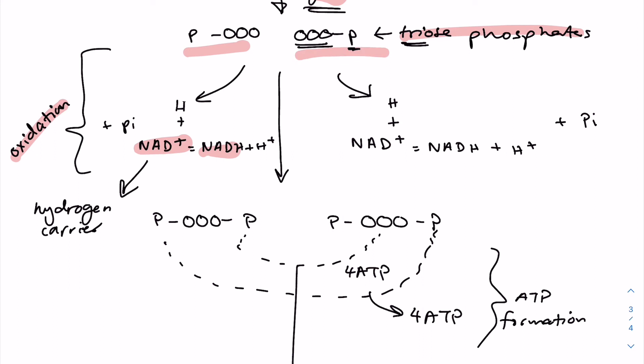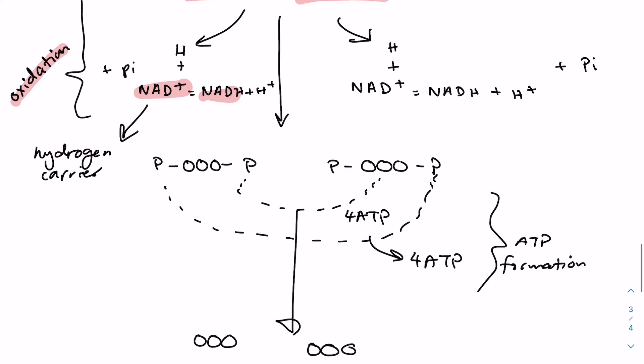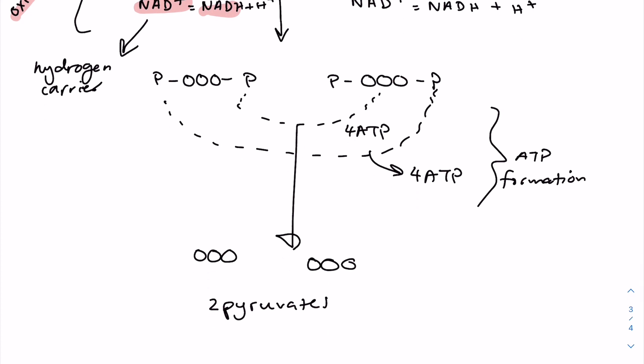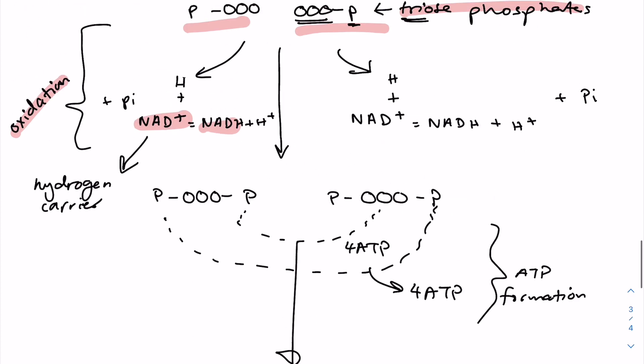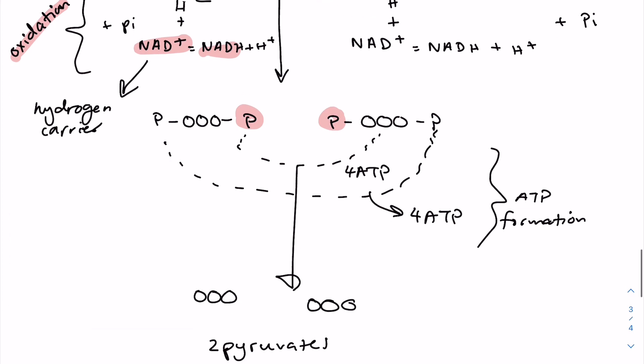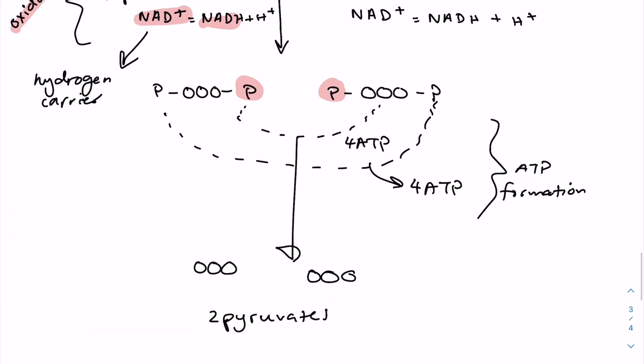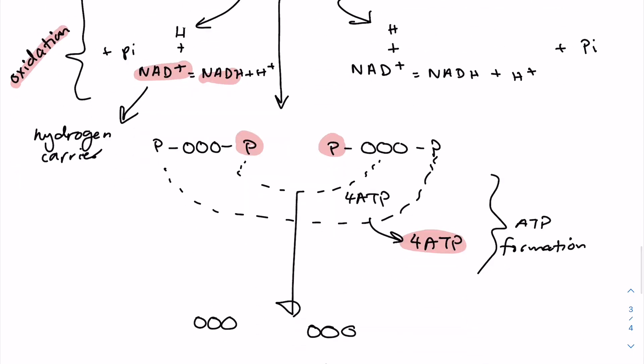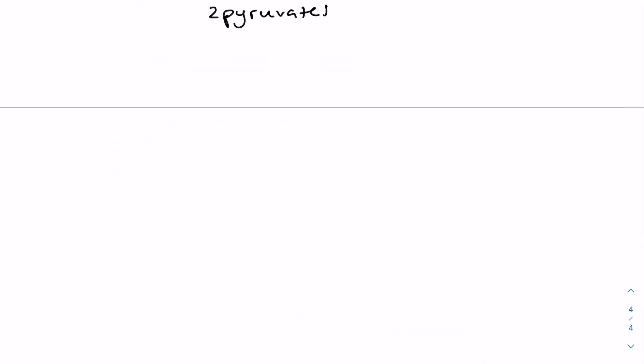The fourth step is ATP formation. So basically the triose phosphates are phosphorylized, meaning that they gain another phosphate group. Four molecules of ATP are generated from this process as some of the energy released from the sugar intermediate is directly used to synthesize this ATP. So basically, by the end of glycolysis, three main things have happened.